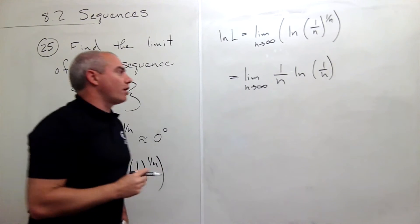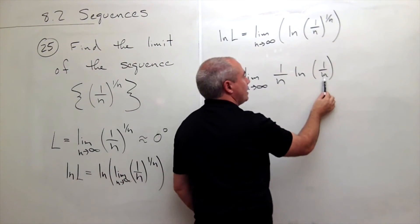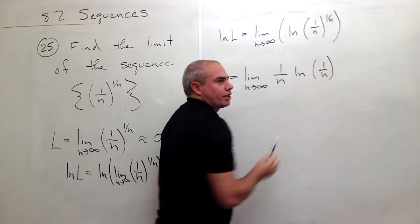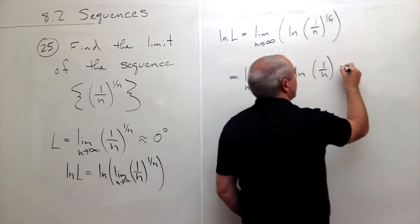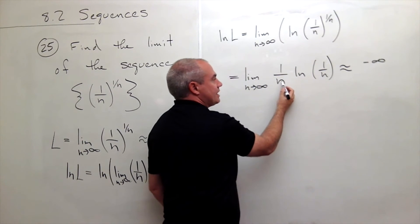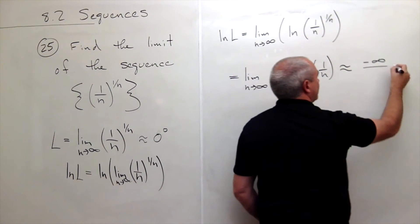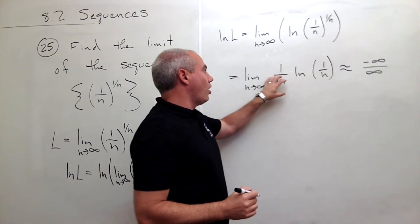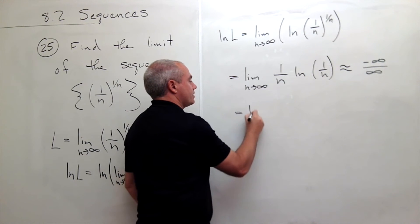And now let's see what our form is like. If I plug in infinity to n here, I get 1 over infinity which is like 0. ln of 0 is kind of like minus infinity. So I get minus infinity and if I consider this n to be on the bottom of this fraction, I get an infinity on the bottom. So I have a minus infinity over infinity. Maybe it would be helpful to write it like this to see it better.